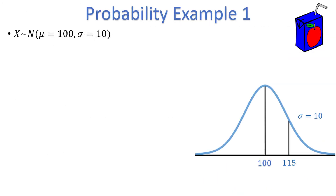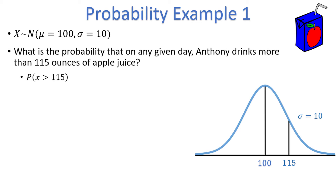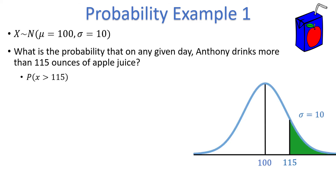Consider this question: What is the probability that on any given day, Anthony drinks more than 115 ounces of apple juice? This can be translated into the probability statement, the probability that x is greater than 115. On the normal distribution graph, we can shade the area greater than 115 to help us better visualize the problem. The shaded area represents the probability that we are trying to solve for.